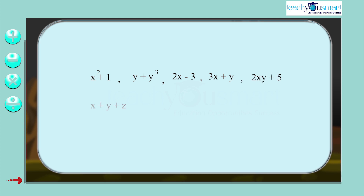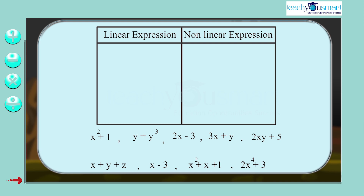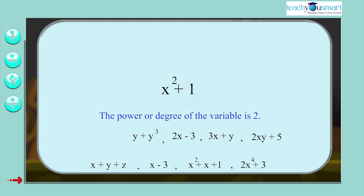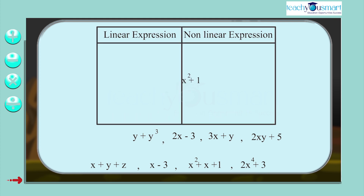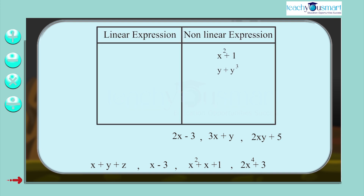Here are some algebraic expressions. Can you identify the linear expressions among them? In x squared plus 1, the power or degree of the variable is 2, so it is not a linear expression. In y plus y cubed, the power of y in a term is 3, so it is not a linear expression.